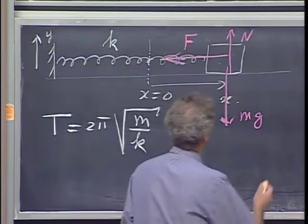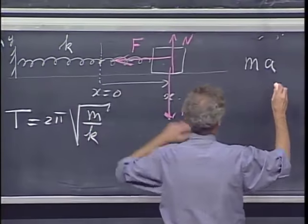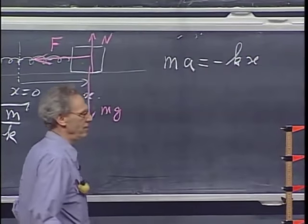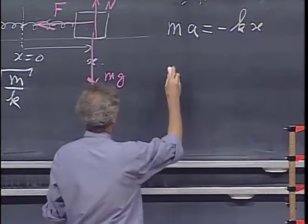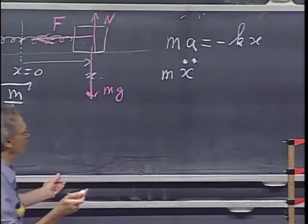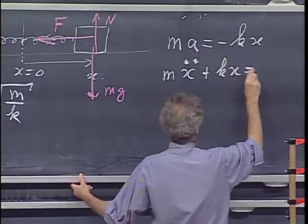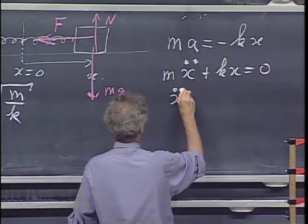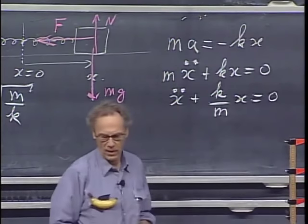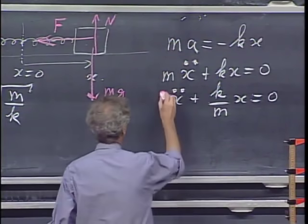Newton's second law in the x-direction: ma equals minus kx. The acceleration is the second derivative of position, so mx double-dot plus kx equals zero. Dividing by m gives x double-dot plus (k/m)x equals zero. This is arguably the most important equation in all of physics — it's a differential equation.